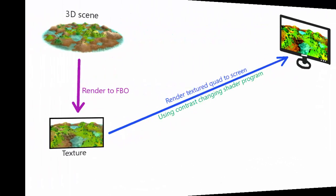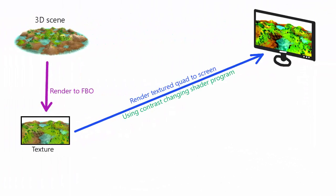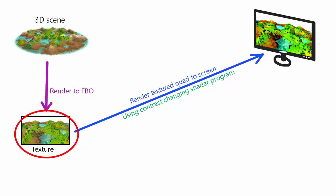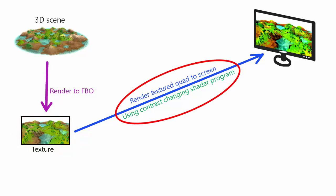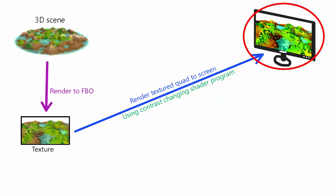Hopefully you remember from last time that our current post-processing pipeline looks something like this. We first render the scene to an FBO to get our starting image, and we then pass it through the Contrast Changer shader which changes the contrast of the image and renders it onto a fullscreen quad on the screen.